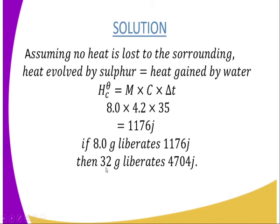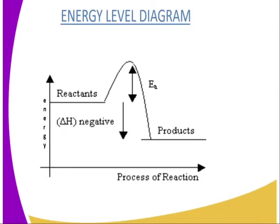For 32 grams, which is equivalent to one mole of sulfur, we scale up: molar heat of combustion = 4,704 joules. This information can be represented in an energy level diagram. Since combustion is an exothermic reaction, the reactants have more energy than the products.